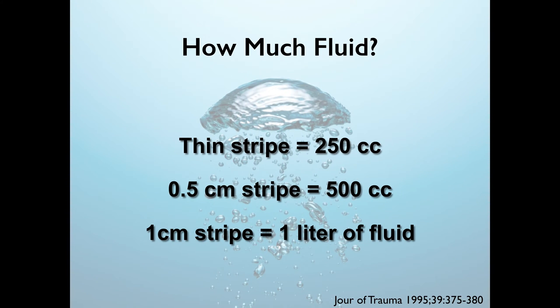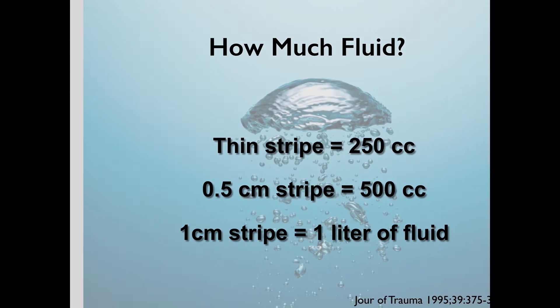Regarding how much free fluid: a thin stripe corresponds to about 250 cc's or about one unit of packed red blood cells. 0.5 centimeters corresponds to about 500 cc's, and 1 centimeter is about 1 liter of fluid.